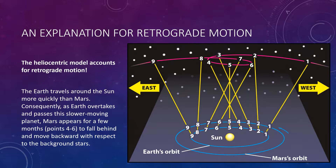Imagine riding on a fast racehorse. As you pass a slowly walking pedestrian nearby, he appears to move backwards relative to you, even though he is still traveling in the same direction as you. This sort of simple observation inspired Aristarchus to formulate the heliocentric model in which all the planets, including Earth, revolved around the Sun. Different planets take different lengths of time to complete their orbit, so from time to time one planet will overtake another. When Earth overtakes Mars, for example, Mars appears to move backward in the sky — and that's what we call retrograde motion.